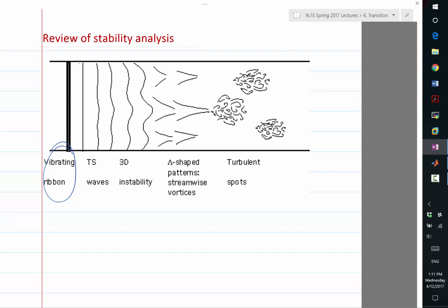Is there like a transition where it becomes three-dimensional or does it become gradually? It becomes gradually. But the three-dimensional, the secondary instability, that's what people call it, happens a lot more rapidly than the primary instability, the TS waves.